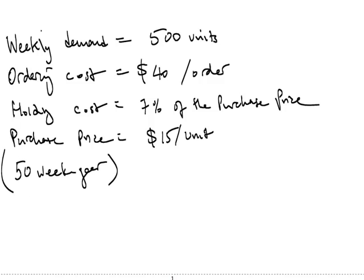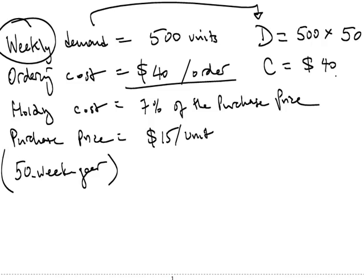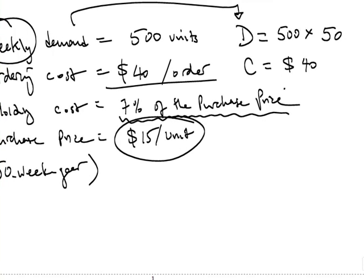The reason we use a 50-week year is because we have a weekly demand and need to determine the annual demand D. So D equals 500 units per week times 50 weeks, giving us our annual figure. The ordering cost C is given directly as $40. Our holding cost H must be expressed as a monetary amount — it is 7% of the purchase price of $15 — so H equals $1.05 per unit.